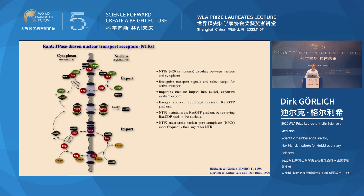The first step is that some cellular factor needs to recognize what should be transported. We call these nuclear transport receptors, and they come in two flavors. Importins pick up cargoes in the cytoplasm and move through the nuclear pore complex, where they encounter RanGTP — a small protein that can switch between two states. When the importin meets RanGTP, it unloads the cargo into the nucleus, then returns to the cytoplasm to import the next cargo molecule. It is a shuttle that circulates between the two compartments.